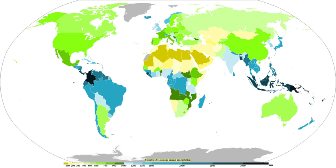The main ways water vapor is added to the air are: wind convergence into areas of upward motion, precipitation or virga falling from above, daytime heating evaporating water from the surface of oceans, water bodies or wet land, transpiration from plants, cool or dry air moving over warmer water, and lifting air over mountains.